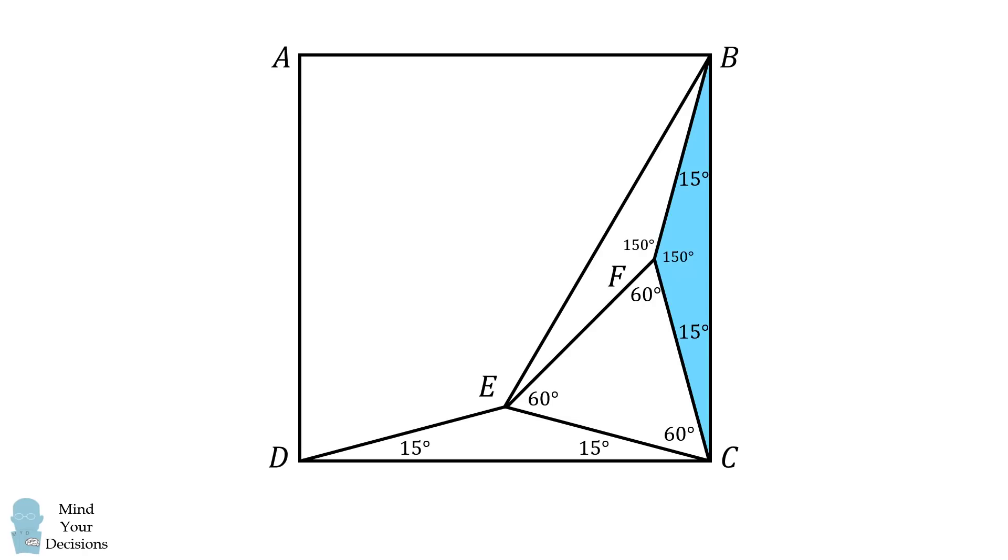We then have the triangles FBC and FBE are congruent by side angle side. Thus, angle FBE is also equal to 15 degrees. Therefore, angle EBC is equal to 15 degrees plus 15 degrees, which is equal to 30 degrees. And that's the answer.